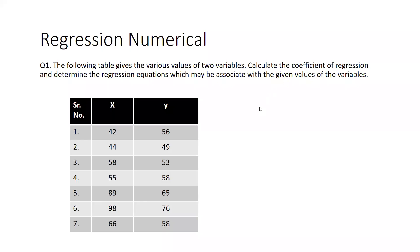Hi everyone, let's begin a regression numerical based on two variables. A table has been given for various values of two variables, x and y. We are going to calculate the coefficient of regression and determine the regression equations associated with the given values. Two things we have to calculate: the regression coefficients bxy and byx.